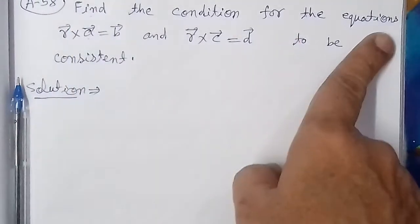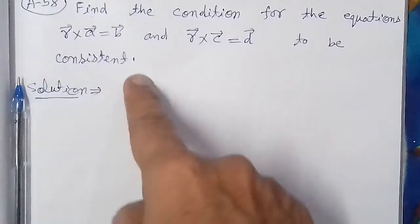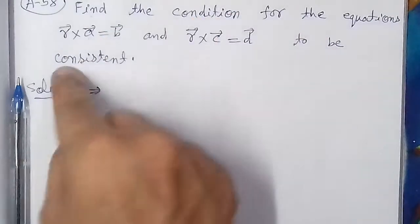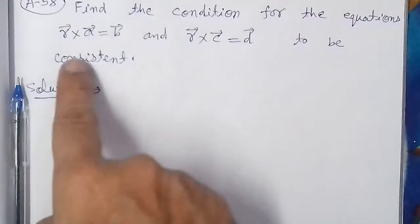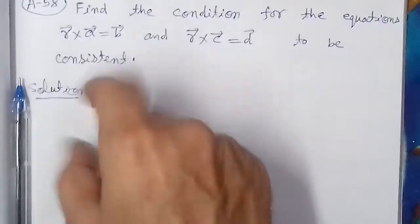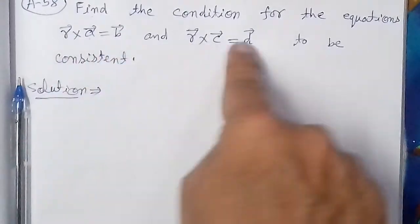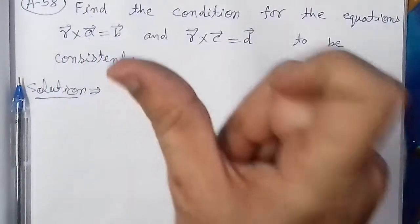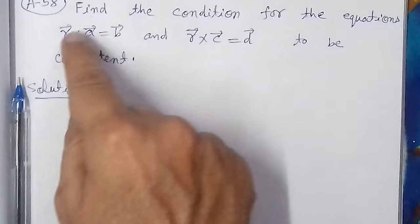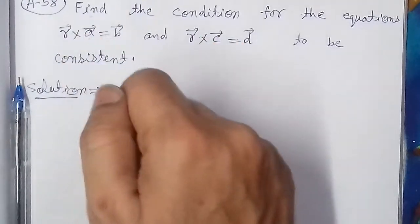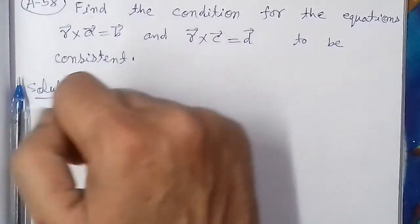हमें condition निकालनी है कि ये दोनों equations consistent हों। Simple शब्दों में consistent का Hindi मतलब होता है 'संगत' — लेकिन यहाँ यह समझें कि ये दोनों equations सही हों, तो क्या इनके बीच में एक relation होगा? वो condition हमें find करनी है।